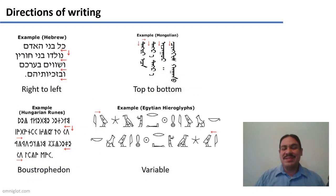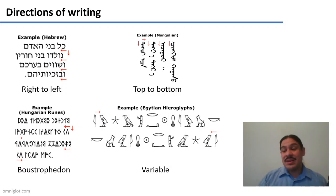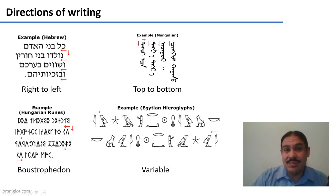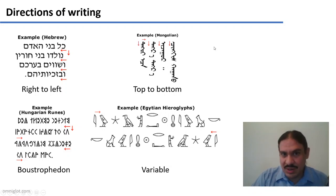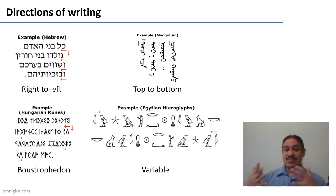One final thing: languages use different directions for writing. In English we write from left to right. In languages like Hebrew or Arabic, the writing is done from right to left. There are languages like Mongolian or Chinese that also have a top-to-bottom direction, where sentences start at the top and proceed downward. Unicode supports those three directions — left to right, right to left, and top to bottom — and the different characters have metadata indicating which direction they should go in.